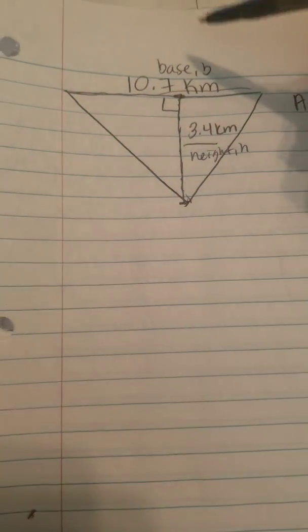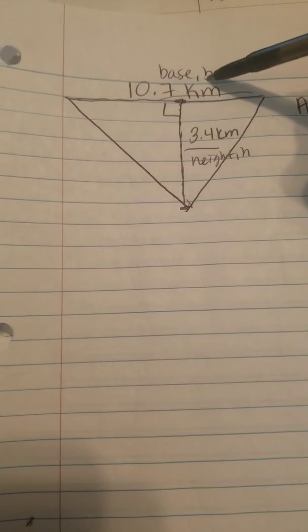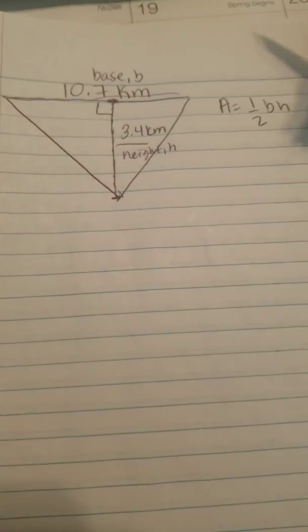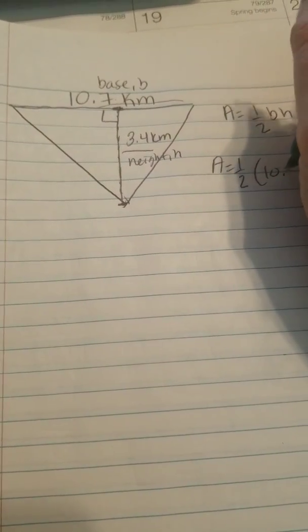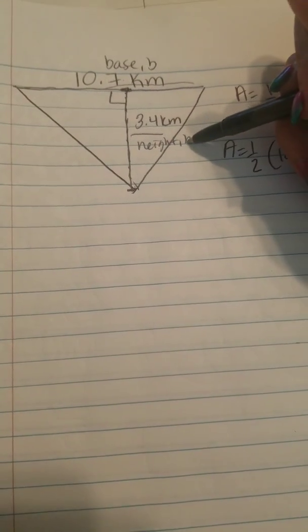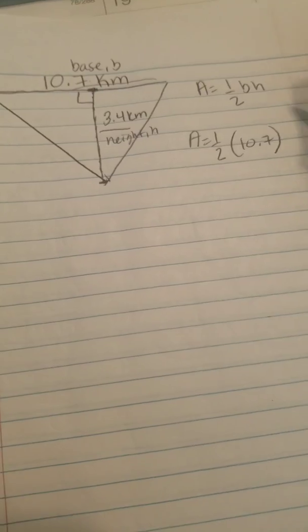All we have to do is plug in the values for each of the variables within the formula. So instead of little b, I'm going to use 10.7, and instead of h, I'm going to substitute 3.4.